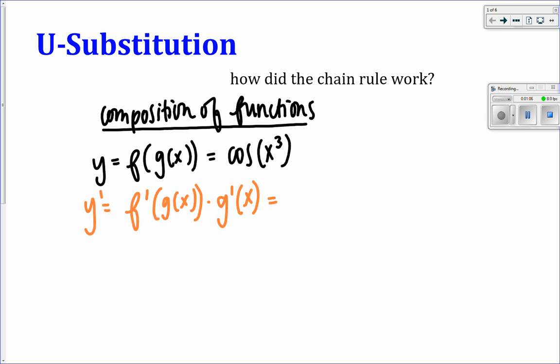So in this case, the derivative of cosine is negative sine of x, but we keep x cubed still there, times the derivative of x cubed, so 3x squared. Or if we clean this up, negative 3x squared times sine of x cubed. That is the derivative.